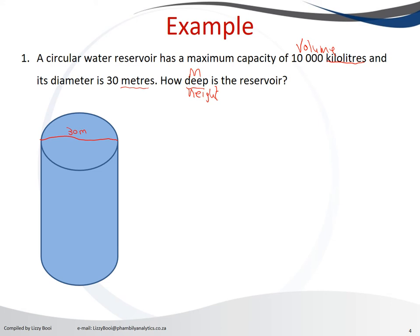But before we do that, the formula to calculate the cylinder is V equals pi r squared times height. We are told what is the diameter, and we know the diameter is 30. Therefore, our radius is equal to 30 divided by 2, which is 15, and we can substitute into the formula.